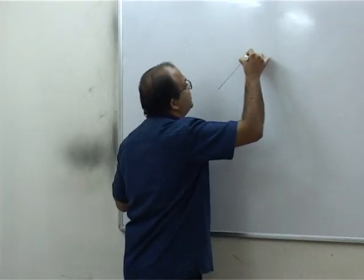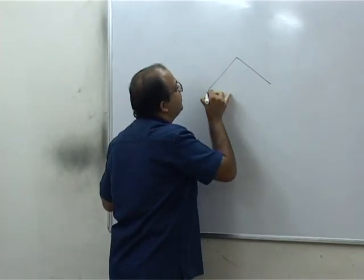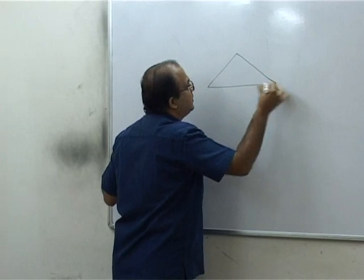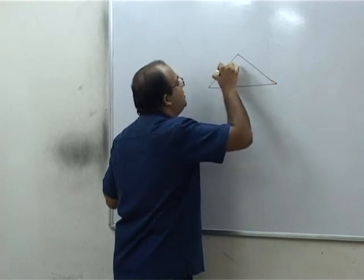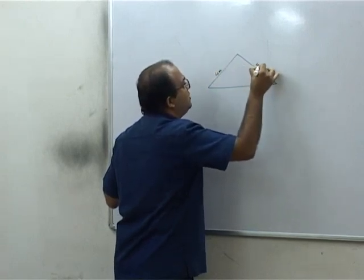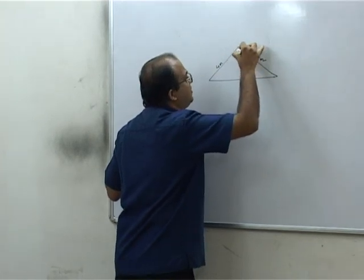Now let us consider a triangular plate. This side is 4 meters, this is 4 meters, this angle is 90 degrees.